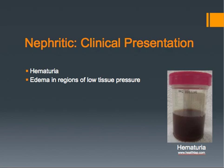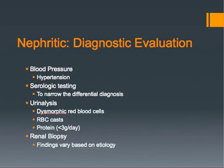Patients with nephritic syndrome may complain of bloody or dark urine, which can be seen in the photo. Patients may have swelling in areas of low tissue pressure, such as the periorbital and scrotal areas. Multiple diagnostic tests would be useful to perform. Blood pressure readings would be high. Serologic tests, including complement levels, anti-nuclear antibodies, cryoglobulins, hepatitis serologies, and many others may be ordered to narrow the differential diagnosis. Urinary analysis would show dysmorphic red blood cells, which are misshapen from being pushed through swollen pores. Red blood cell casts may also be seen, and proteins may be present in the urine, but at a much lower level than with nephrotic syndrome. Renal biopsy results would vary based on etiology and disease.